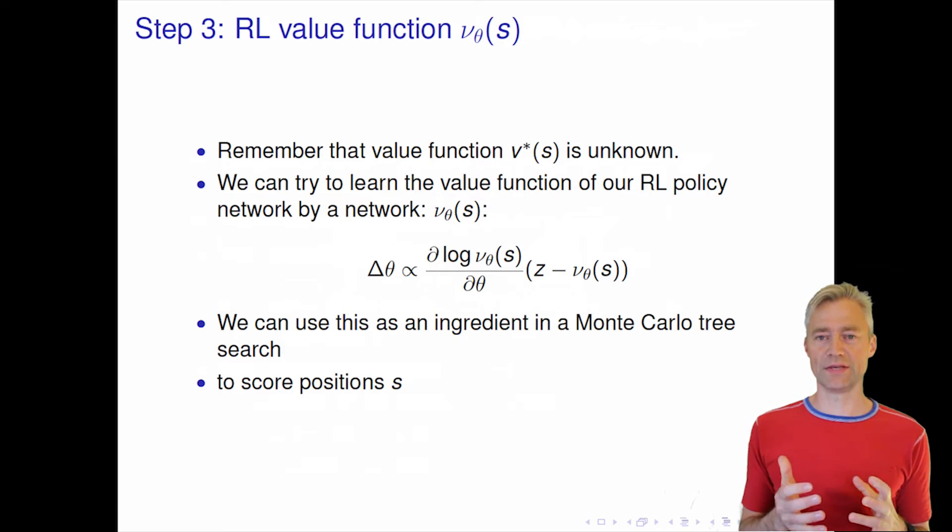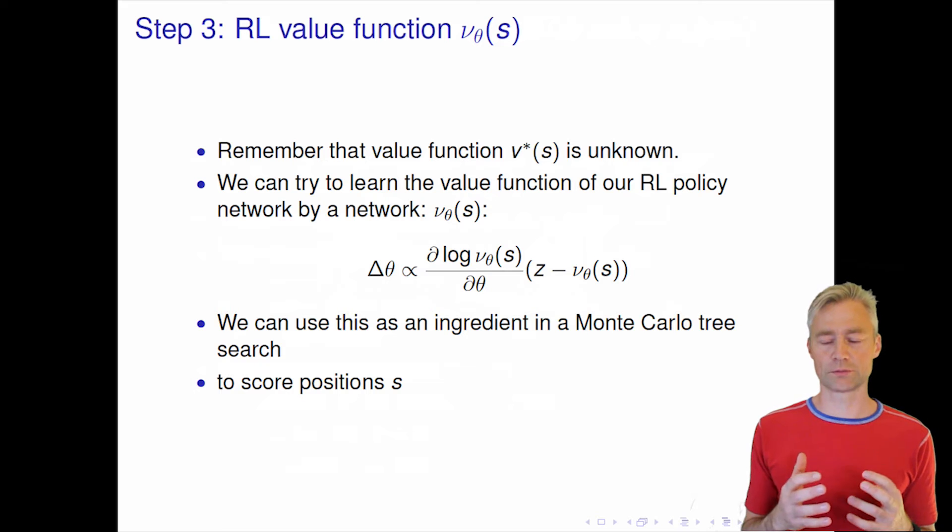Remember that the true value function of the optimal player, v star, is not known. We cannot know it because it's just too expensive. We're hoping that our reinforcement learning policy network is a good player, and we also hope that with this good player we get pretty close to having a value function that is the optimal one. It turned out that it's actually probably not close to being the optimal one, but it's good enough to beat the world champion.